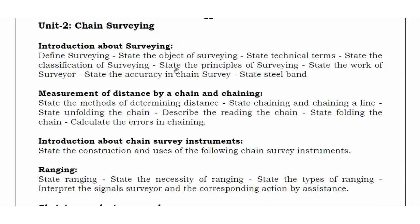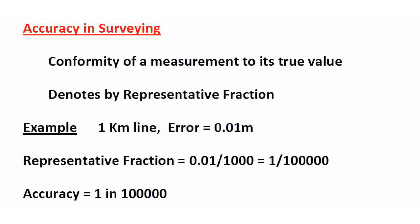Next is accuracy in chain surveying. The degree of accuracy in chain surveying is the key topic. Accuracy means the conformity of your measurement to its true value — that is, how close your measured value is to the true value.